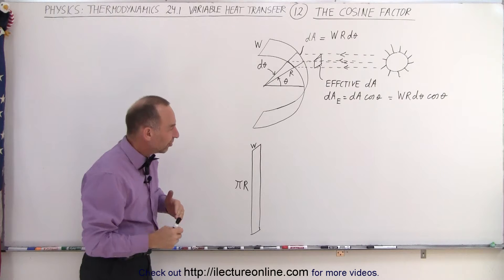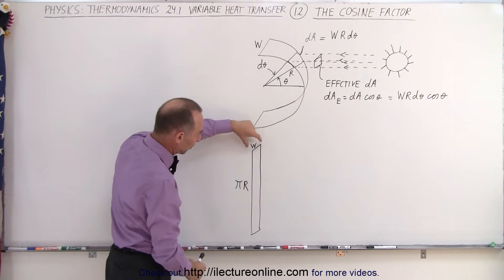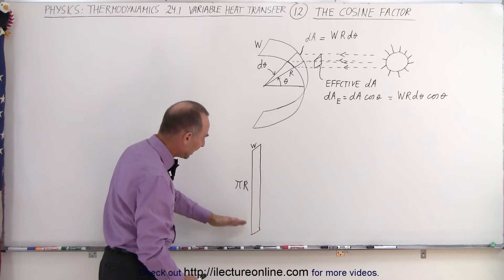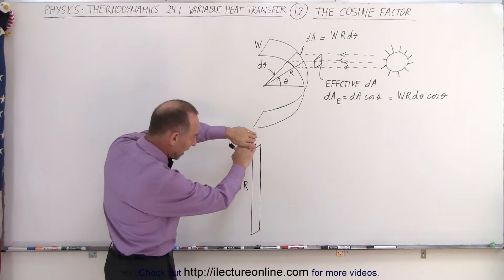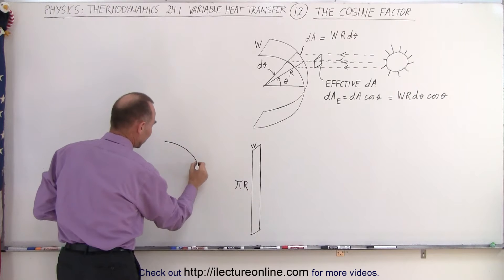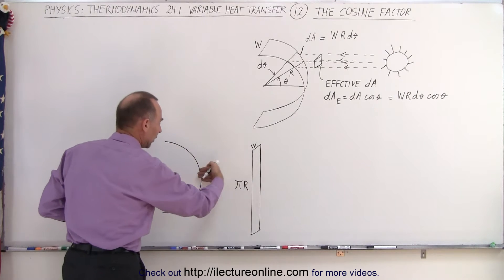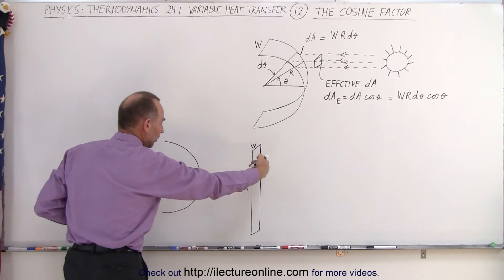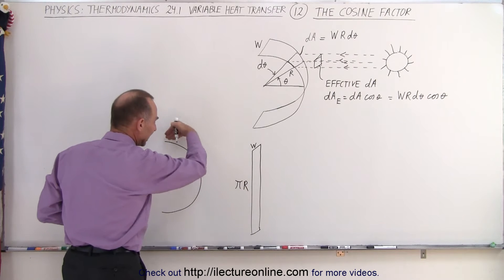To make it simple to see, we'll take a small little strip of width w and length pi times r, and if we take that little strip and we bend it into a semi-spherical shape, so now that it looks like this, and the sun, or the radiation source, is illuminating that strip.